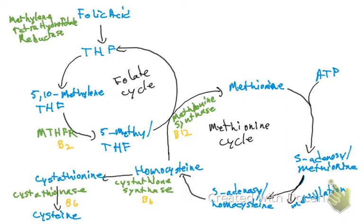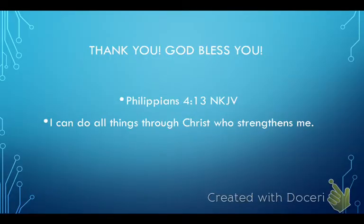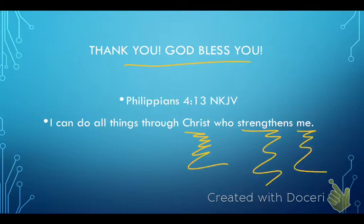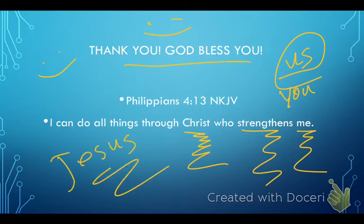So just to recap: in the folate cycle and methionine cycle, we need vitamin B2, vitamin B12, and vitamin B6. Do you see how important the B vitamin complex is? Thank you so much for watching, and remember we can do all things through Christ who strengthens us. God bless you!